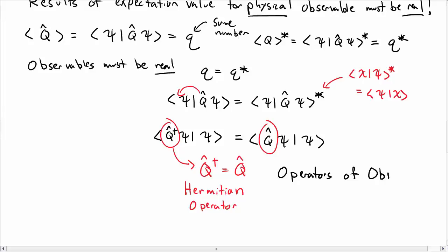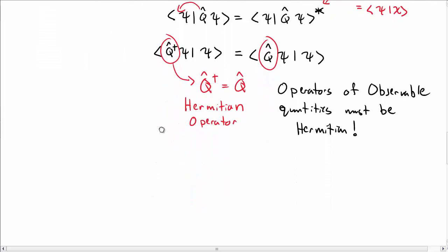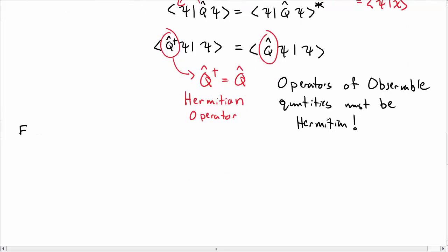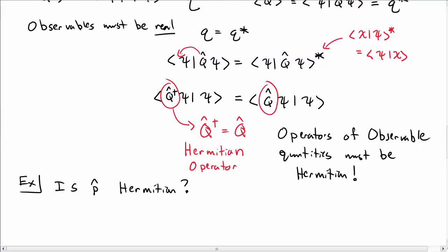So the statement is: operators of observable quantities — things that we can observe — must be Hermitian. Why? Because the expectation value must be real, and for that to be true the operator must be Hermitian. Let's look at a quick example: is the momentum operator p-hat Hermitian?